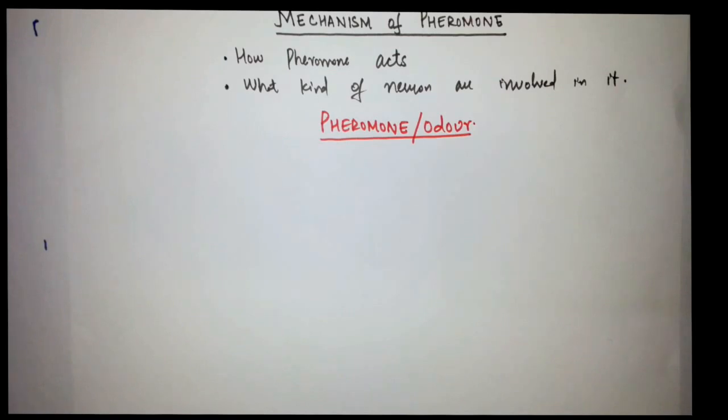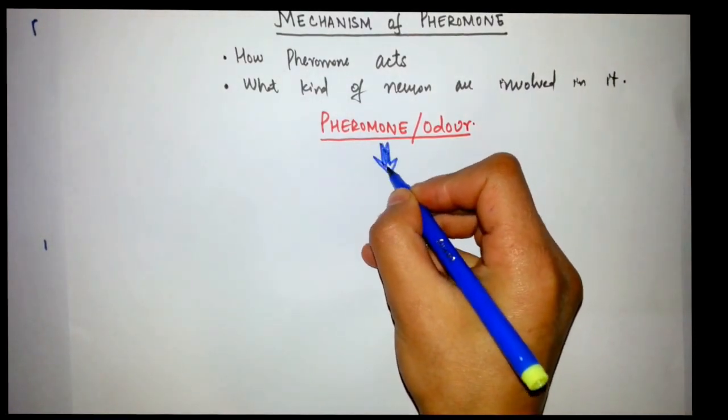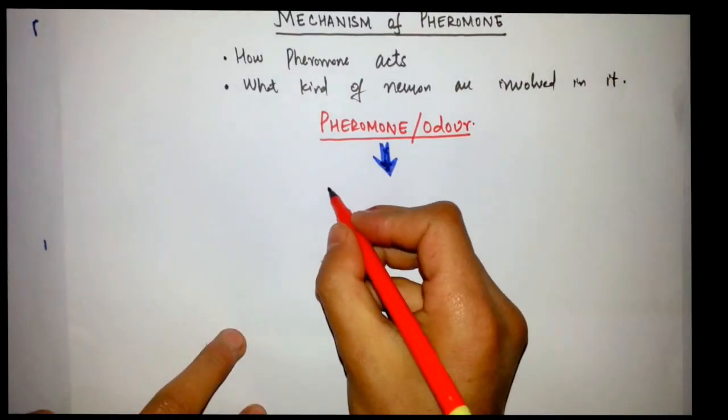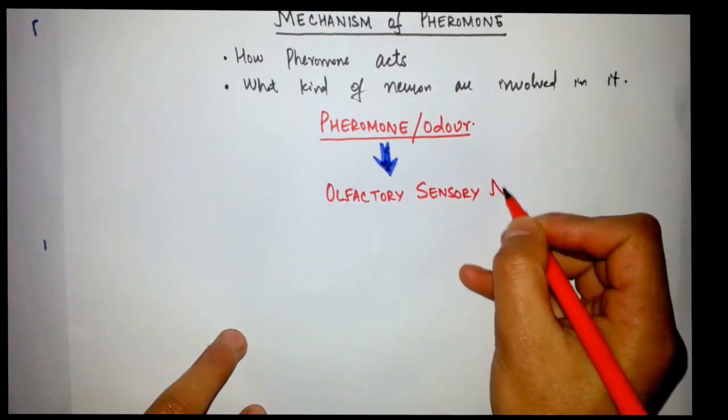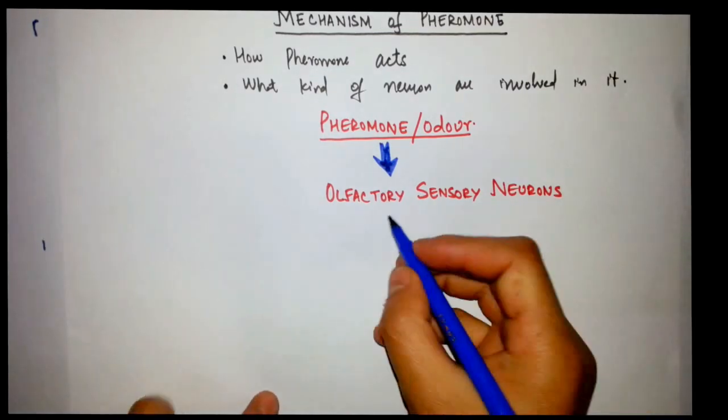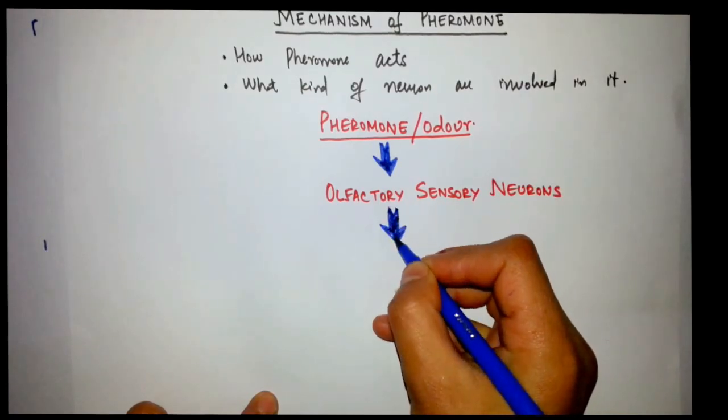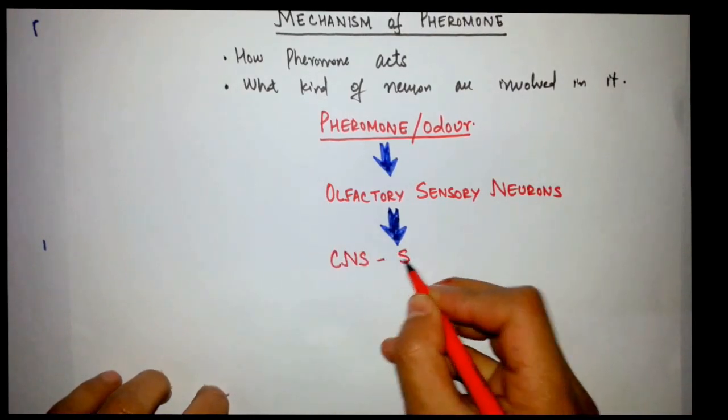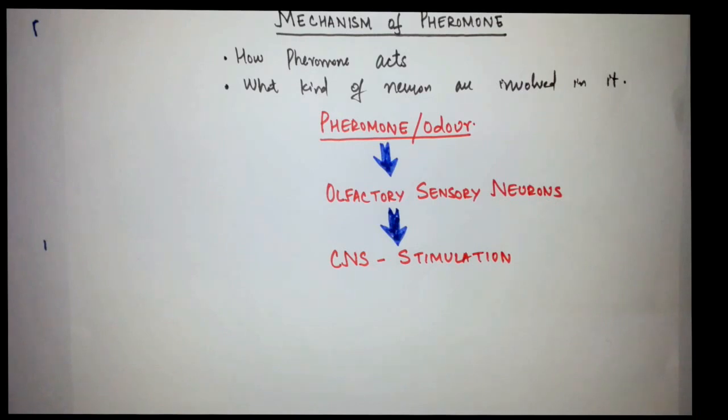When there is a pheromone secreted by any animal, it's sent to the olfactory sensory neurons. Olfactory sensory neurons have the property of chemoreception. They receive this pheromone or odor in order to stimulate the CNS, and the next step would be CNS stimulation. CNS is stimulated by olfactory sensory neurons.